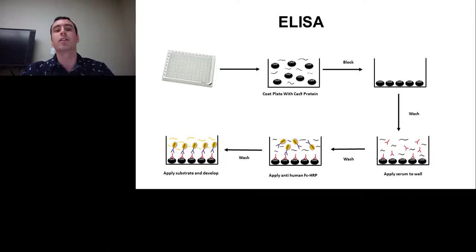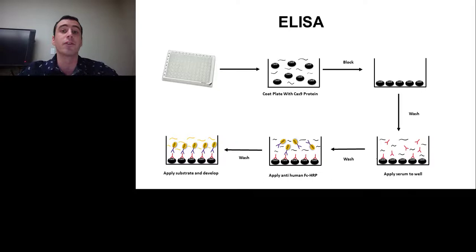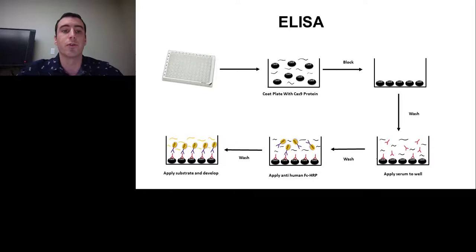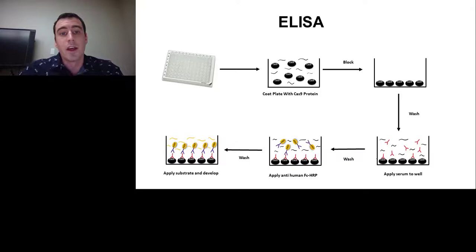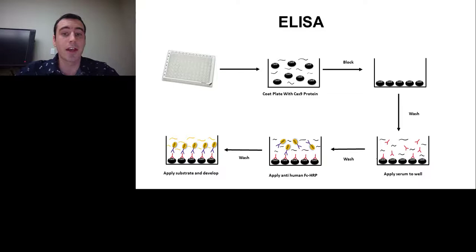Having found we could clearly detect antibodies against Cas9, we next set up an ELISA, which is both quantitative and allows higher-throughput screening. The principle is: a plate is coated with Cas9 protein, blocked, then incubated with donor serum. If the donor has Cas9-specific antibodies, they bind to Cas9 on the plate. After washing, a secondary antibody specific against human antibodies — conjugated to horseradish peroxidase — is introduced. After washing and adding substrate, any antibody-Cas9 binding causes a color change measurable at 450 nm absorbance.